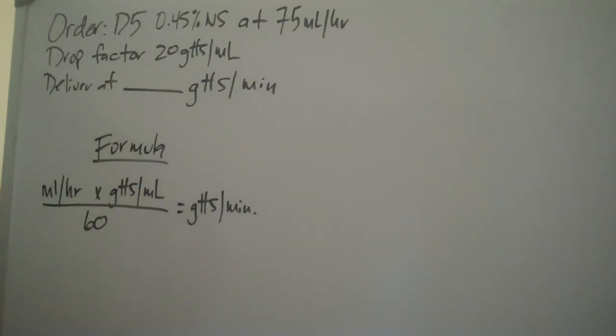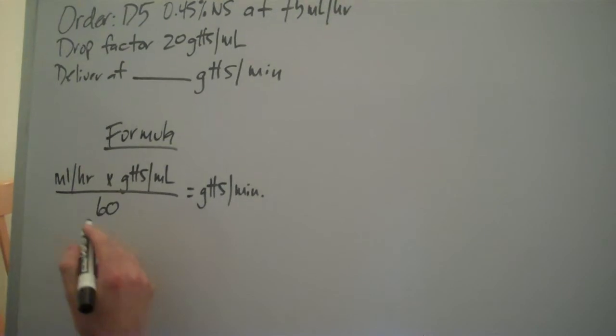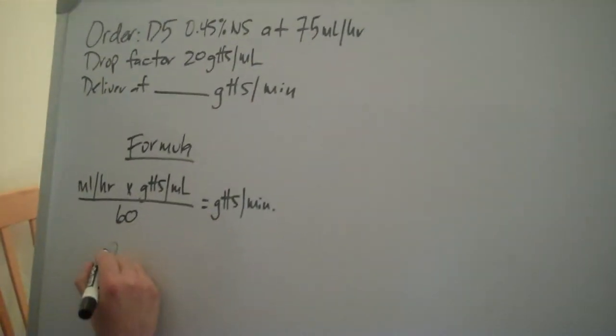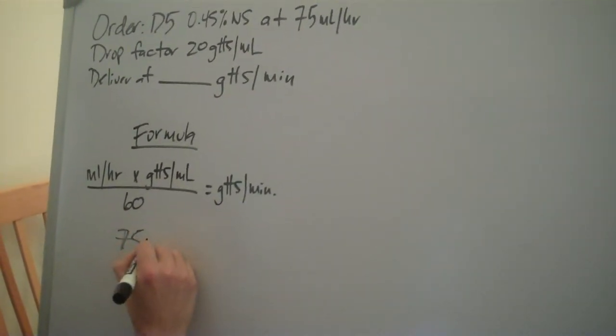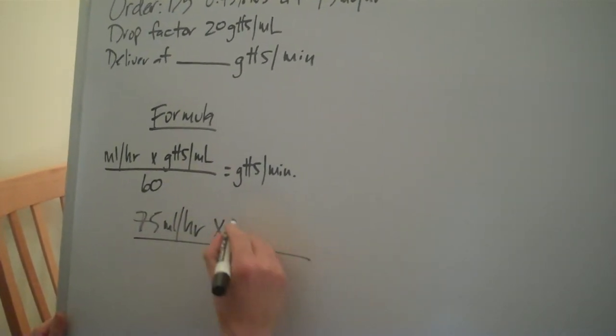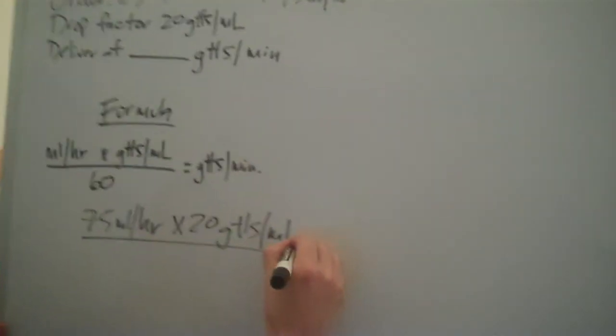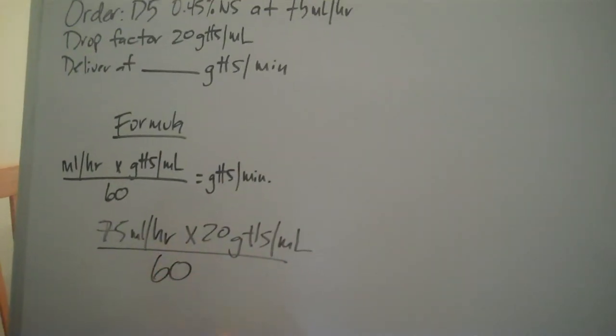Okay, this is a very easy problem. We are given everything. We have our milliliters an hour, so we know that's running at 75. We're going to multiply that by our drop factor, which is 20. And that is over 60 minutes.